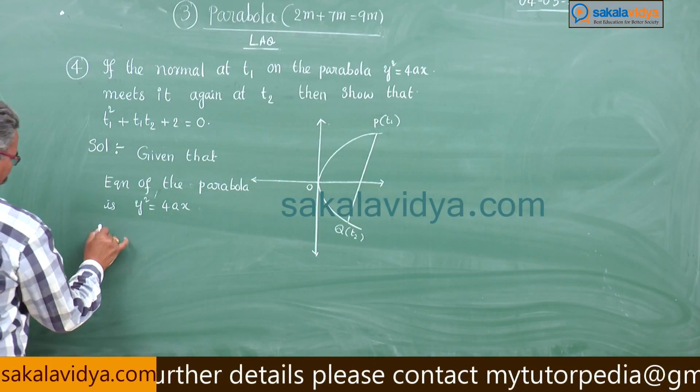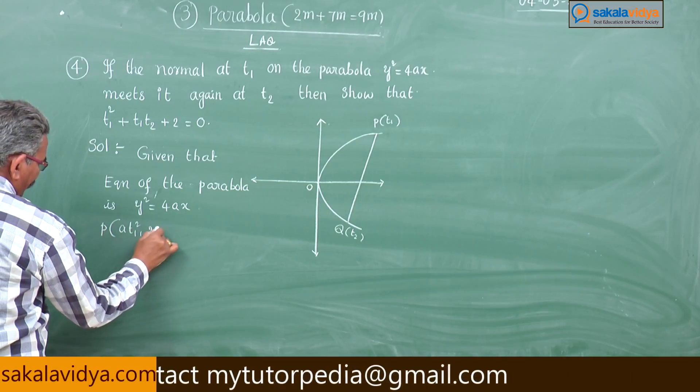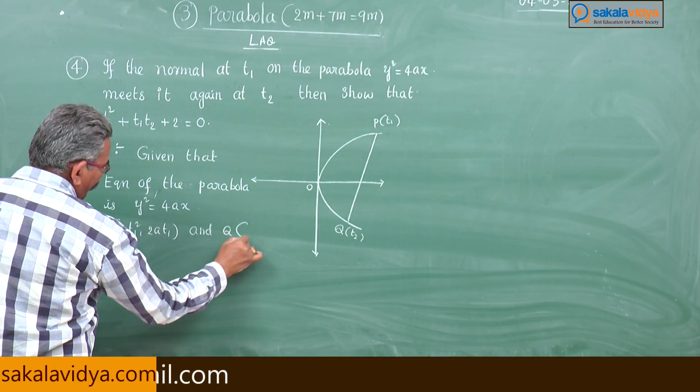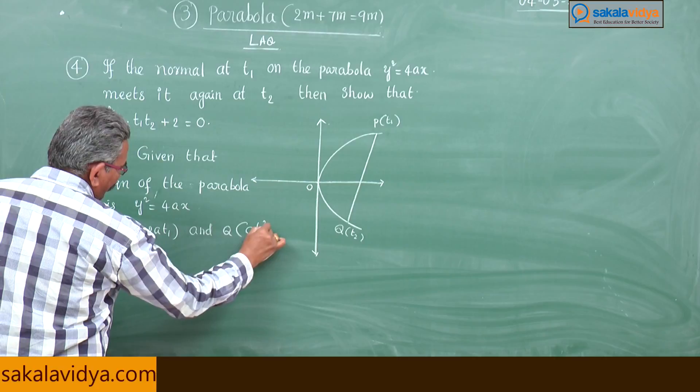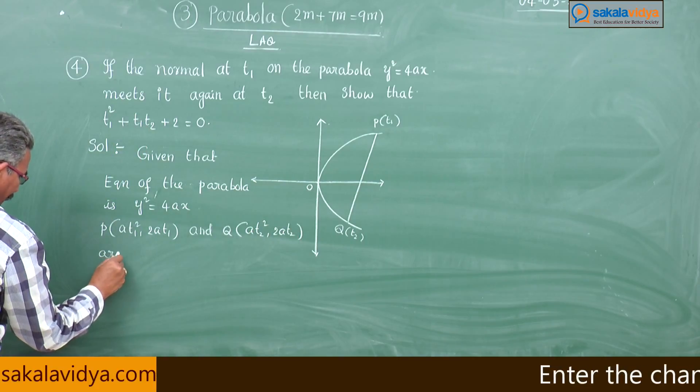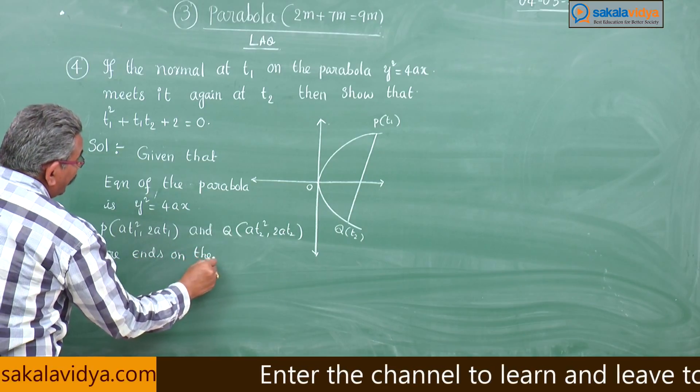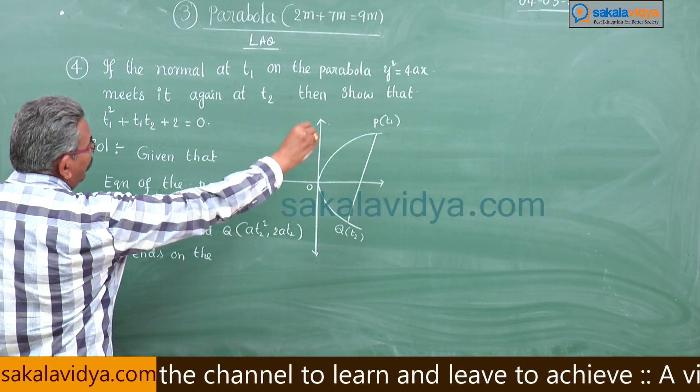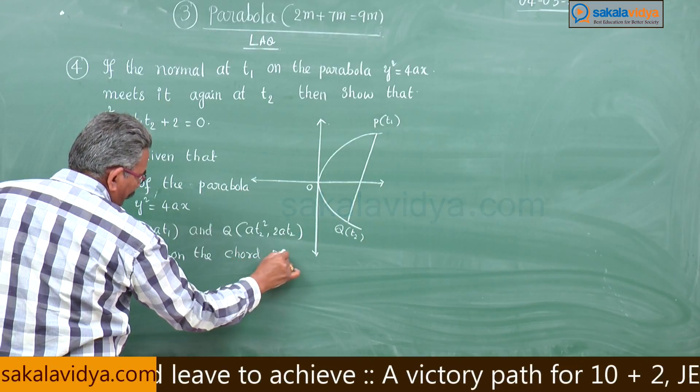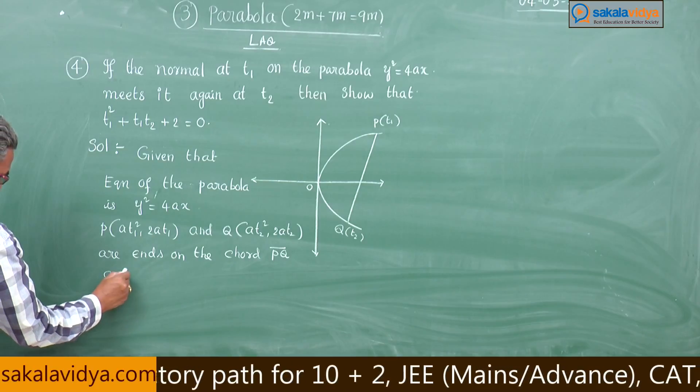Now, P at (a·t1 squared, 2a·t1) and Q at (a·t2 squared, 2a·t2) are the ends of the chord PQ on the parabola.